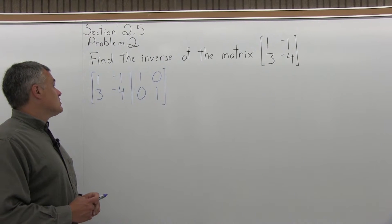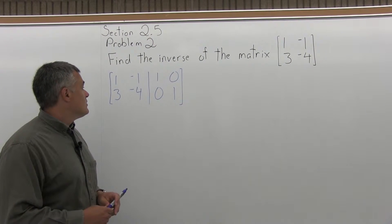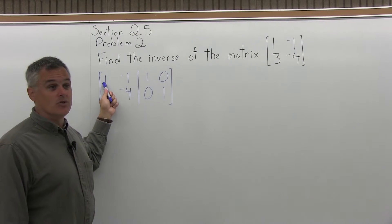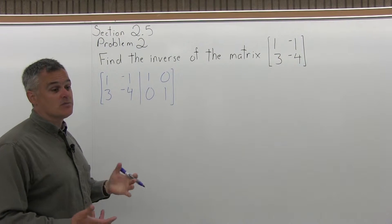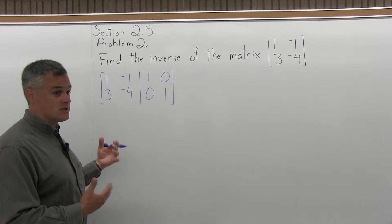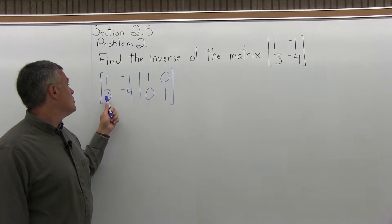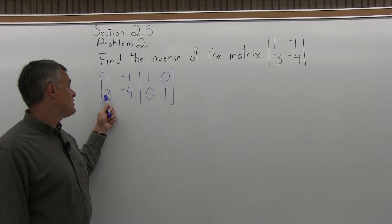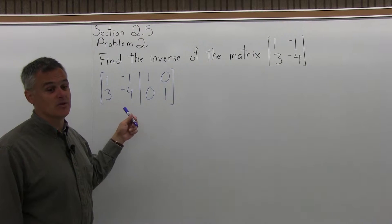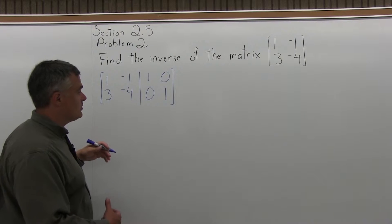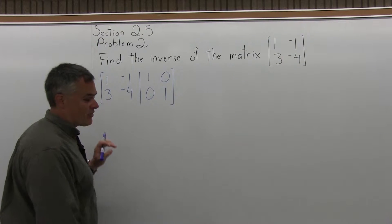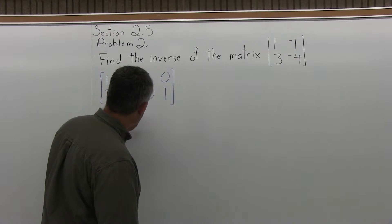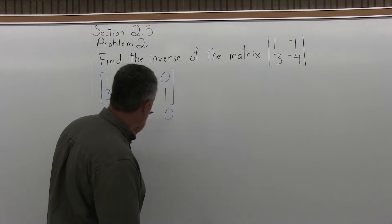In order to solve the matrix on the left half of our double matrix, the first thing we need to do is turn the number in the upper leftmost position into a 1. Now it's already a 1 just by good fortune, so we can proceed to the next step, which is turn the rest of that leftmost column into 0. We only have one value here, a 3, that we have to make into a 0. The top row can stay the way it is: 1, negative 1, 1, 0.